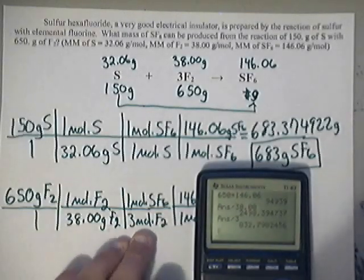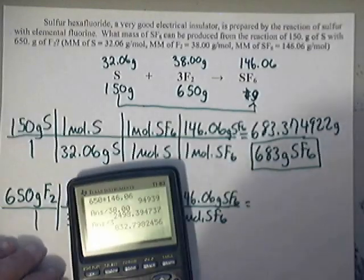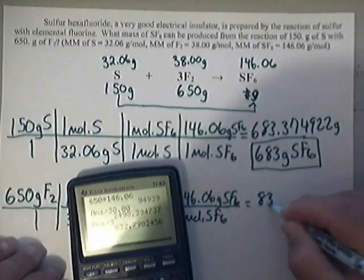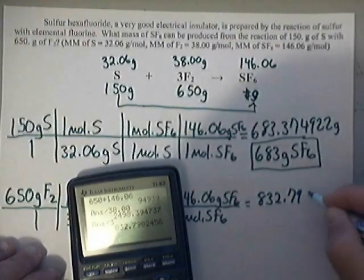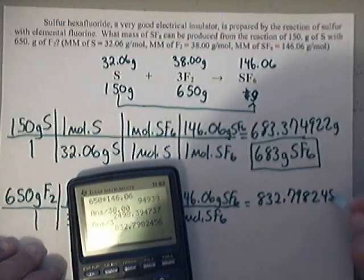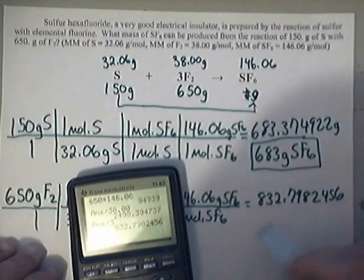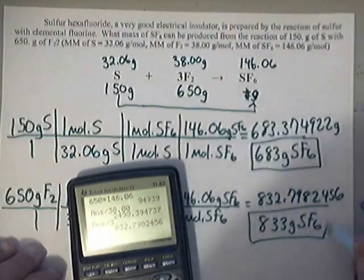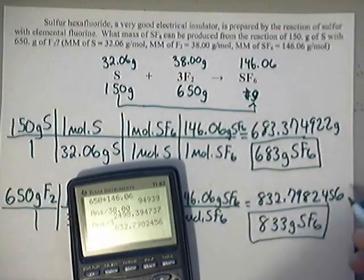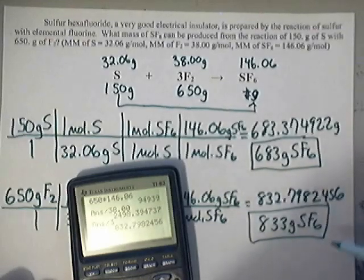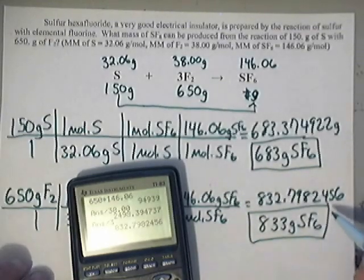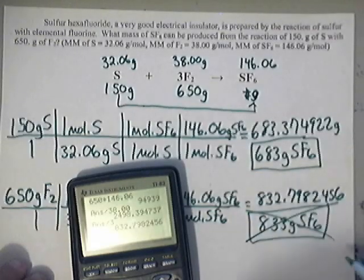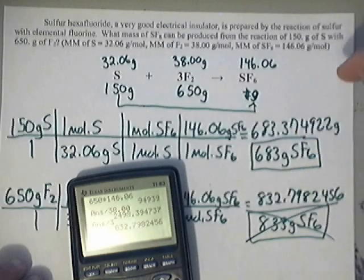I'm also going to divide that by 3. So I end up getting 832.7982456. Once again 3 sig figs, it's going to end up being 833 grams of SF6. Now only one of these is possible. The only one that is possible is the smallest one. Because we can't make this much because that's way too much. So basically this is impossible because it's too big. This one's the answer for the limiting reactant or the limiting reagent because it's the smallest.